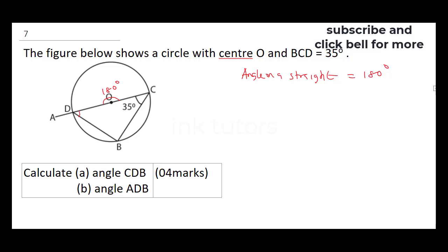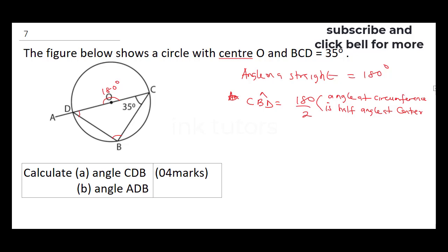Having established that, there is another angle theorem: the angle at the circumference is half the angle at the center. So angle CBD is going to be 180 divided by 2, giving us 90 degrees.